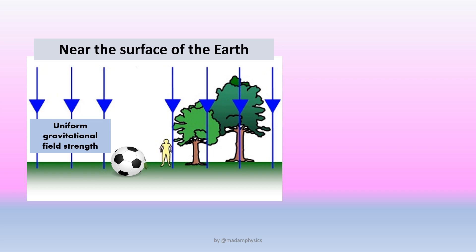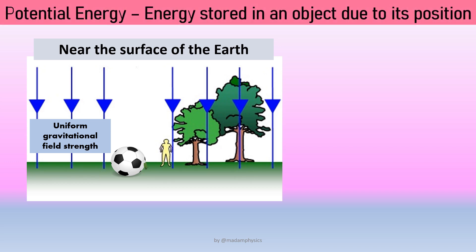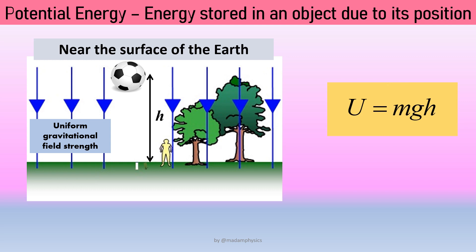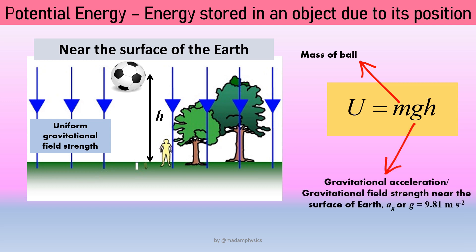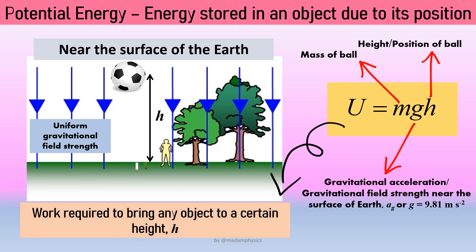Let's look at the general definition of potential energy. Potential energy is the energy associated with position. For example, a ball going up stores potential energy because it has a certain height from the surface of the Earth. To quantify this, the formula is U equals mgh, where U is the potential energy, m is the mass of the object, g is gravitational acceleration — constant near the surface at 9.81 m/s² — and h represents the height or position.